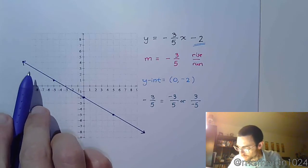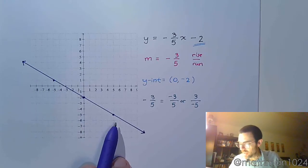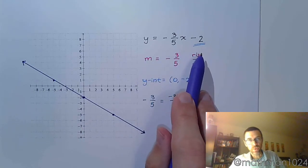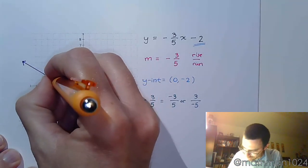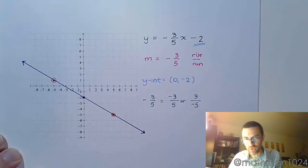Any ordered pair that we have on here is going to satisfy this original equation. Not only that, but we can pick any two points on here and it's going to simplify to give us that same slope. For example, if I go from here to here, I want you to notice what's going to happen.